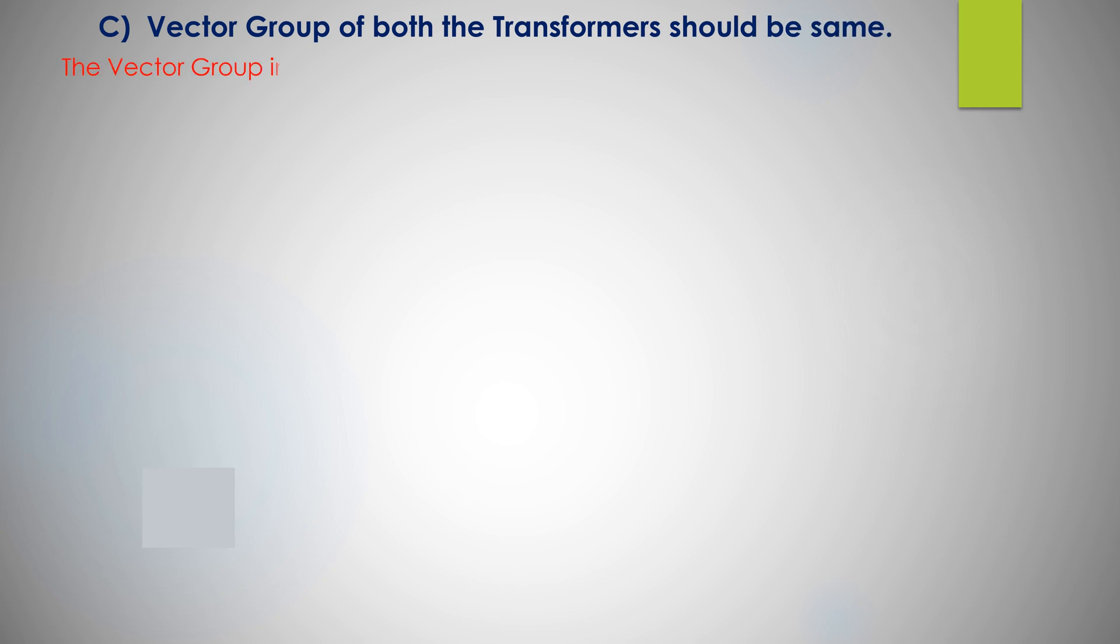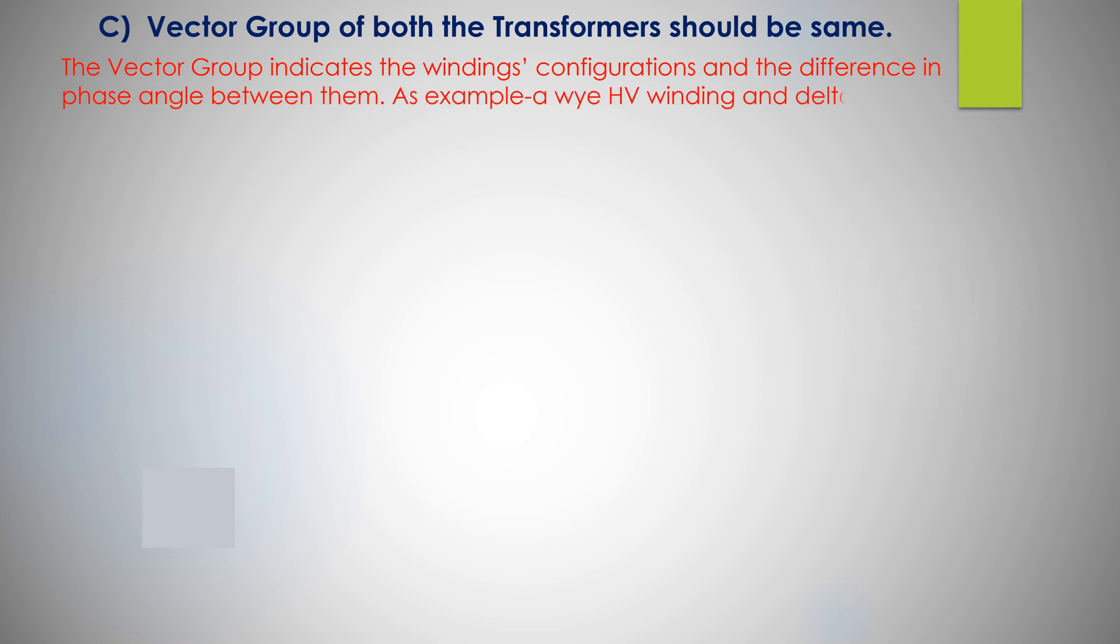Vector group of both transformers should be same. The vector group indicates the winding configuration and the difference in phase angle between them. For example, a Y HV winding and delta LV winding with a 30 degree lead denoted as YD11.